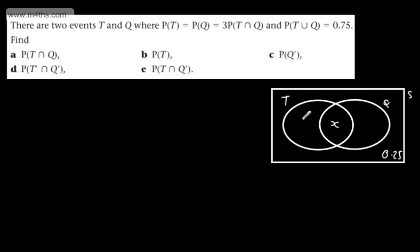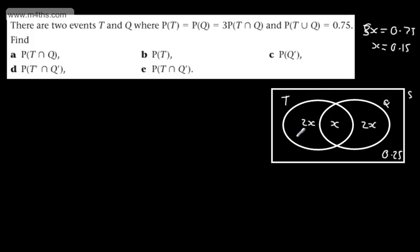We can see that 5X must equal 0.75, so X equals 0.15. Putting these probabilities on: the intersection is 0.15, the T-only and Q-only regions are each 2X equals 0.3, and the outside is 0.25. All of these add up to 1.